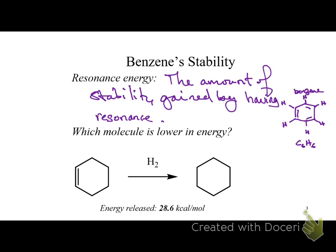Benzene has three double bonds, and for delocalization or resonance, each of those carbons needs an available p orbital. Since each carbon has three groups on it in the benzene ring, they are all sp2 hybridized. One of the important features of benzene is that it's flat — every carbon is sp2 hybridized, it's a ring, and every carbon has a p orbital on it.